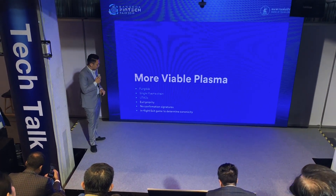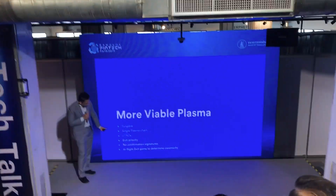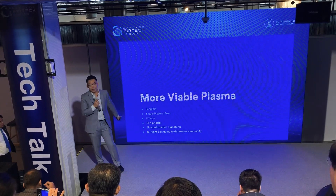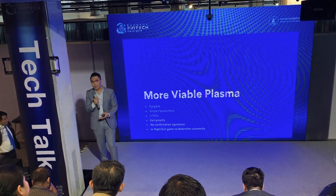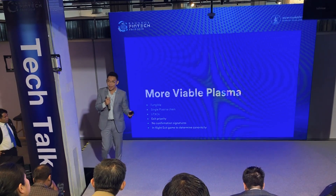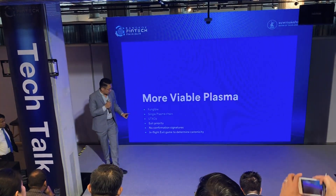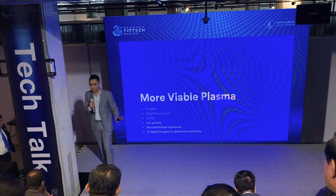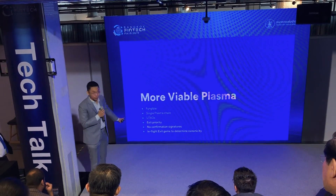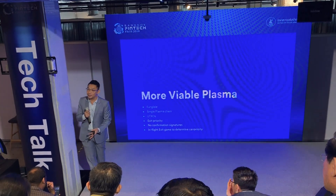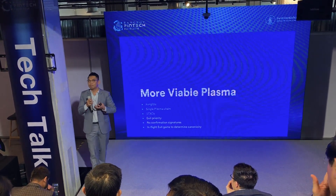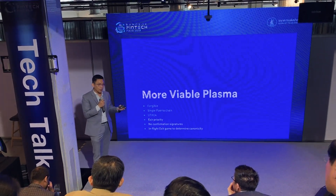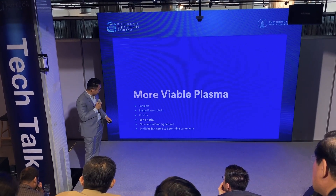We invented a new thing called More Viable Plasma. It's still fungible, still a single plasma chain, still UTXO-based, but we changed the exit priority mechanism by removing confirmation signatures. Now we treat transactions optimistically — we assume all transactions are valid by default. The security is handled through a new mechanism called the in-flight exit protocol, which is recourse: you send a transaction, assume it's valid, and through a socioeconomic process you can interact with the root chain and get your money out without involving anyone else.